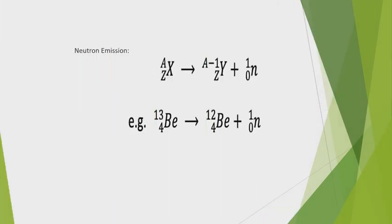Neutron emission: in neutron emission, the atomic number does not change because atomic number only counts protons or electrons. The mass number decreases by 1 due to the emission of a neutron. For example, beryllium-13 (atomic number 4) becomes beryllium-12 (atomic number 4) plus 1 neutron.